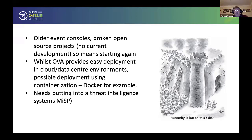Also, using OVAs as a deployment mechanism into data centers is fine, but we need to think about other deployment options such as containerization and Docker. Before, a lot of potential threat data could be collected, but it wasn't put into any sharing platform — there was no threat intelligence system. We're now thinking about something like MISP, for example.